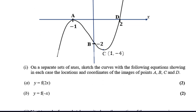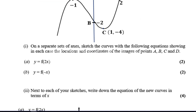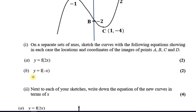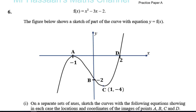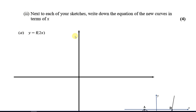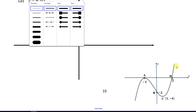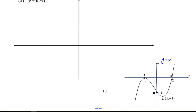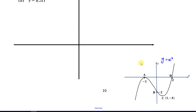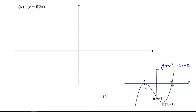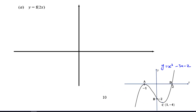First, y equals f of 2x. It also says to write down the equation of the new curve in terms of x. So the original curve is y equals x cubed minus 3x minus 2. I've put a little diagram down here of what we had up there so we can see what's going on.